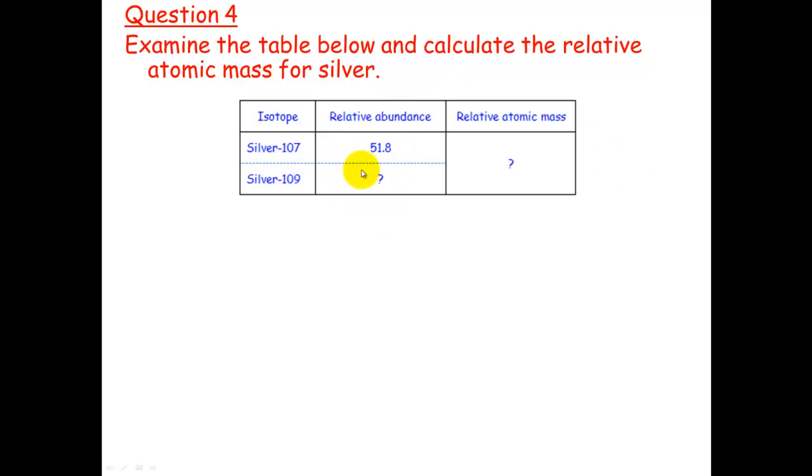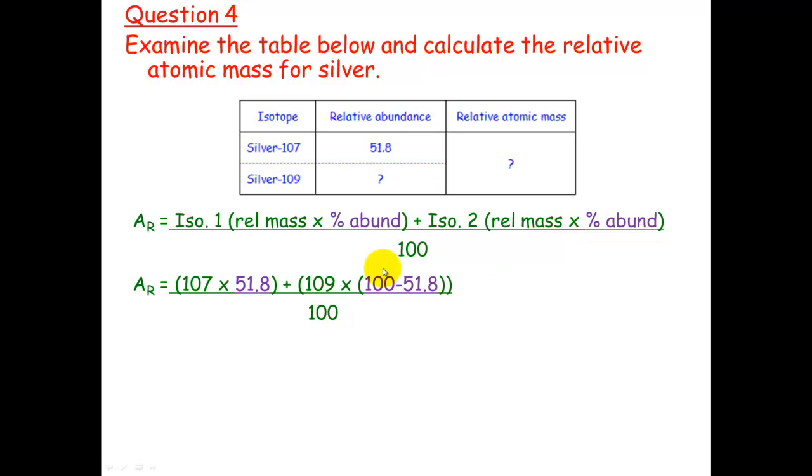The important thing to remember here is that the relative abundances need to add up to 100%. We know that the formula is isotope's relative atomic mass of isotope 1 times its abundance plus isotopic mass of isotope 2 times its abundance. But we don't know the percentage abundance of the second isotope, or do we? If the entire abundances have to add up to 100%, the abundance of the second isotope is going to equal the total abundance, which is 100%, minus the abundance that we know, which is 51.8, which will equal 48.2. So we can just work that out again, and we work out that it's got a relative atomic mass of 107.9.